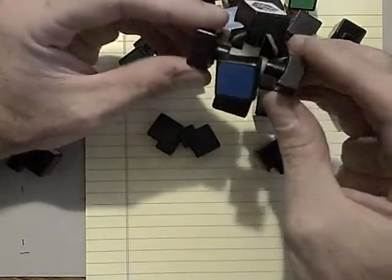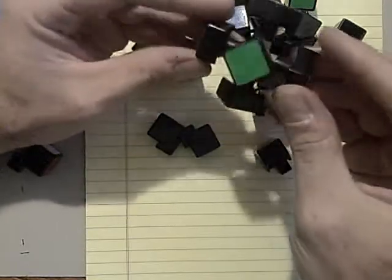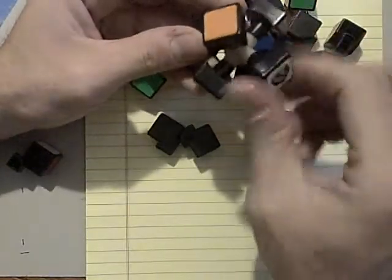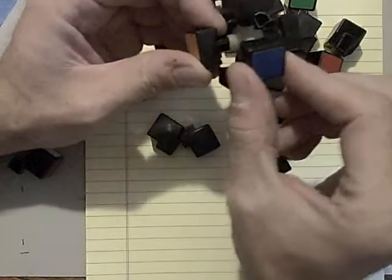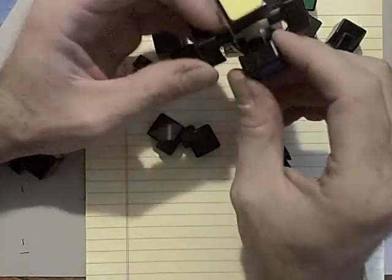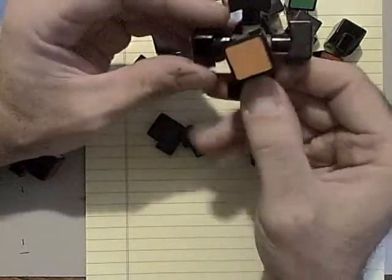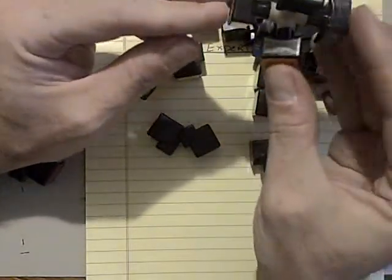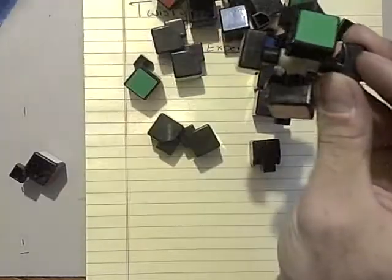So the Rubik's cube, this is the basic mechanism. You have three perpendicular axes, and they can rotate. Notice that these centers are fixed. There's no way to change the location of blue, or yellow, or orange. These things are fixed.